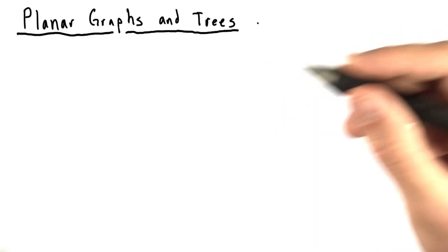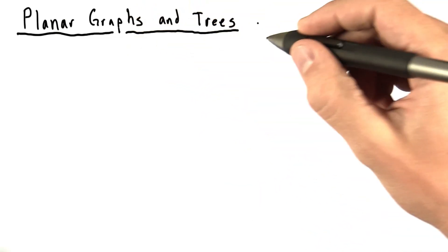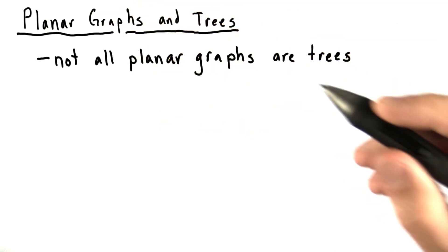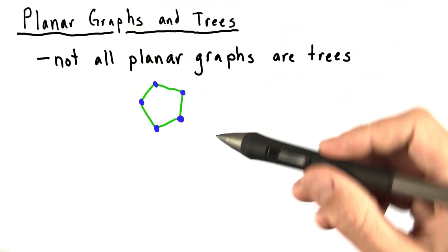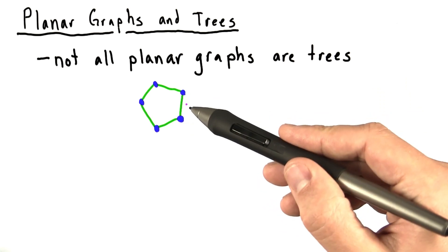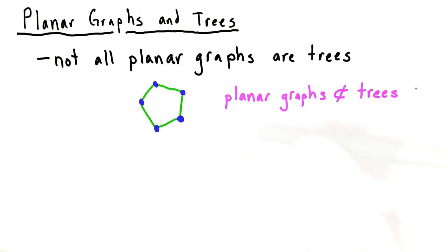The first part of the subset question asks about planar graphs and trees. The first thing to note is that not all planar graphs are trees. For example, here is a ring, which is a planar graph, and it's not a tree. So planar graphs are not a subset of trees.